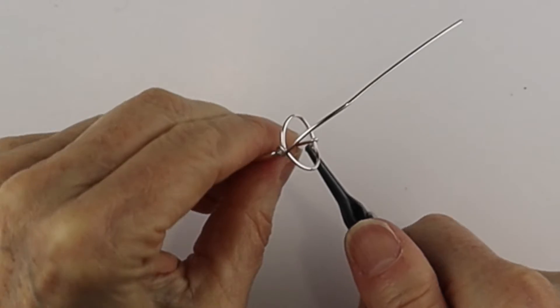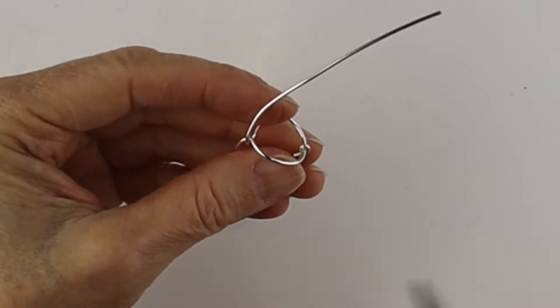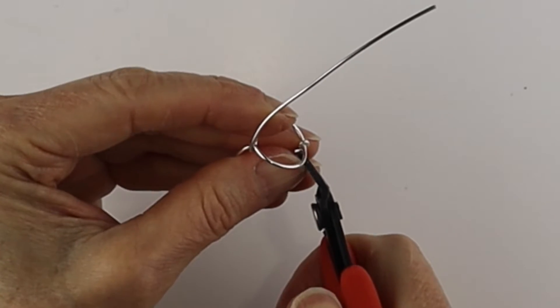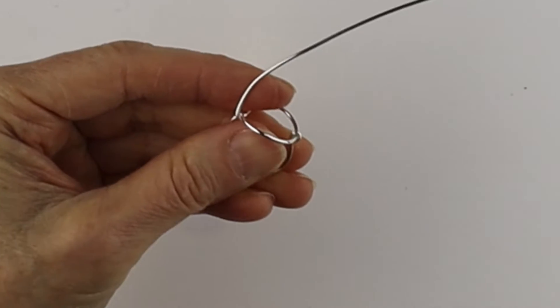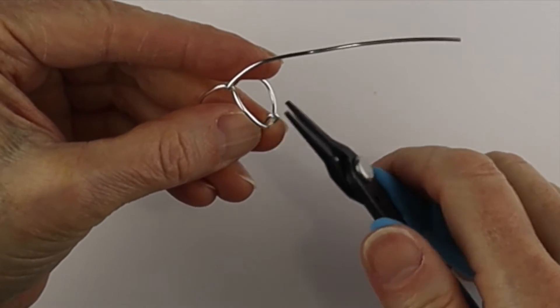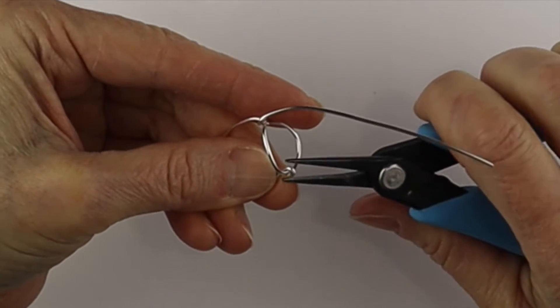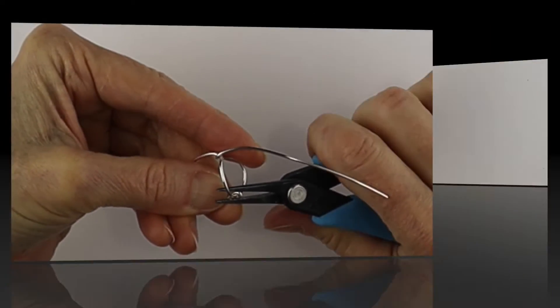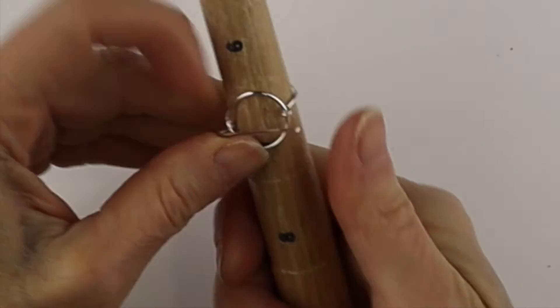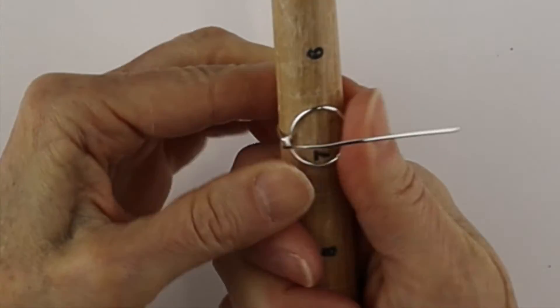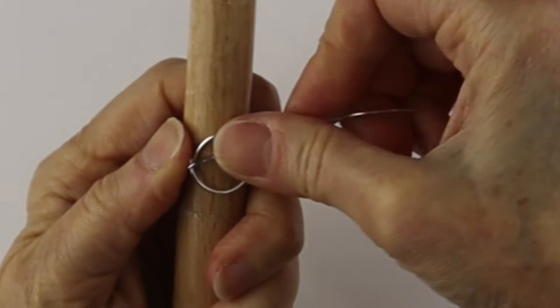Take the end with the pliers to pull it tighter, cut it flush and then we want to take the flat pliers again to pinch it in to hold it in place. From there we'll put it back on the ring mandrel. We'll take the wire.